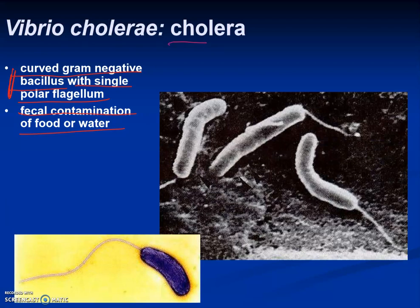Next up is Vibrio cholerae, the cause of the much-feared cholera. There have been many outbreaks over the centuries. John Snow conducted early epidemiological research and tracked a cholera outbreak to a specific well in London. The bacterium is a curved, comma-shaped gram-negative rod with a single polar flagellum. Transmission is by fecal contamination of food or water.